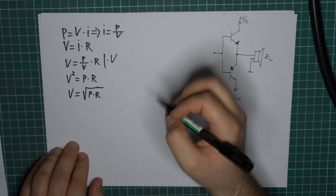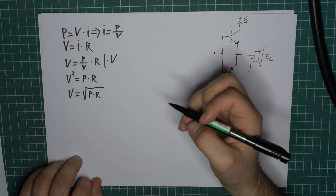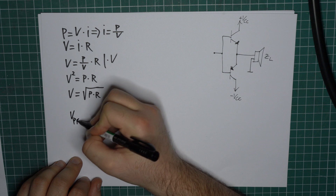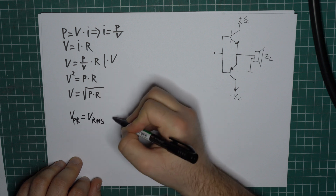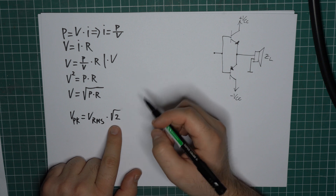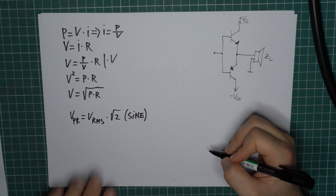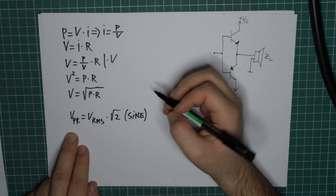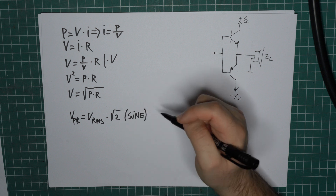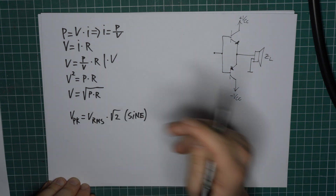To do this we use the formula for peak voltage based on RMS voltage. The peak voltage equals the RMS voltage multiplied by the square root of 2. It's really important to note that this only works for sine waves — we assume we have a sinusoidal signal when we apply this. So how do we get the peak power from this? Is it simply RMS power multiplied by the square root of 2? Well, not really — let's see why.